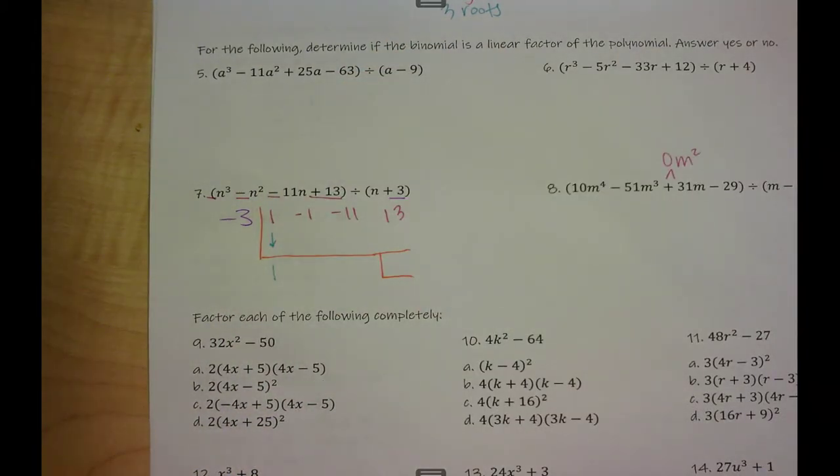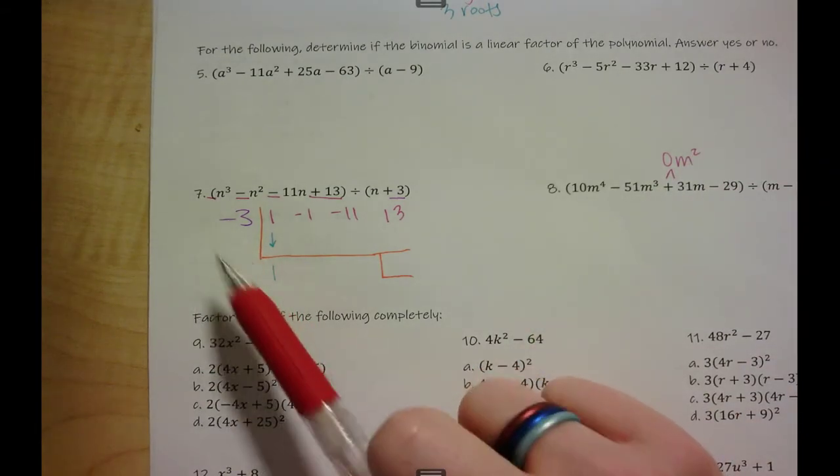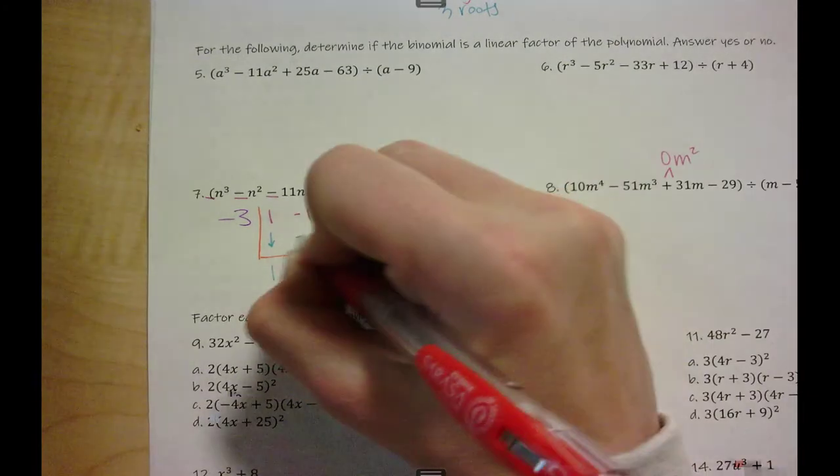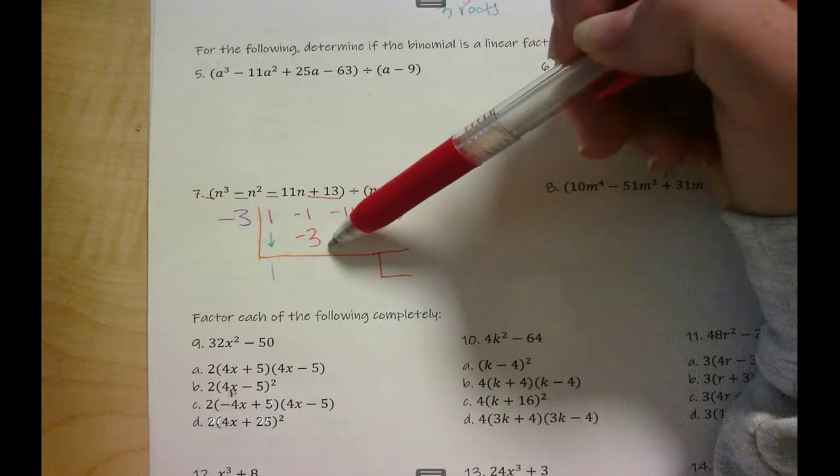We're going to take outside times outside. Negative three times one is negative three. Then I'm adding these negative one minus three.